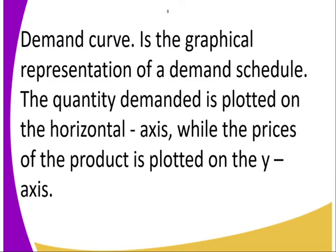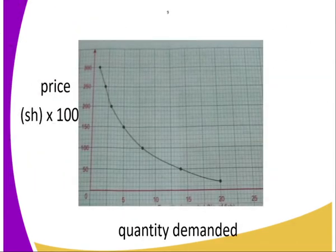When drawing a demand curve, we need the horizontal axis and the vertical axis — that is the x-axis and the y-axis. On the horizontal axis, we plot the quantity demanded, while on the y-axis we plot the prices of the product. As you can see from the schedule we had for Destiny Investment, this is the demand graph we are going to get. When prices are at 30,000, we plot accordingly.